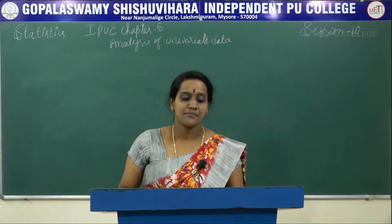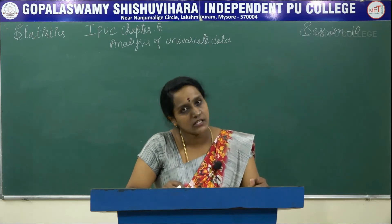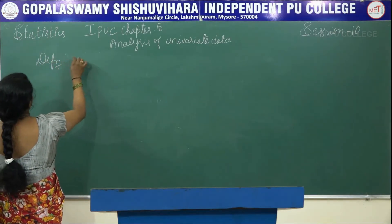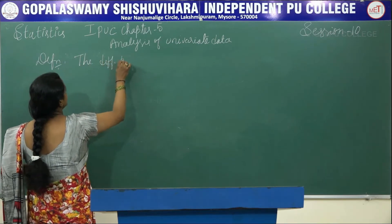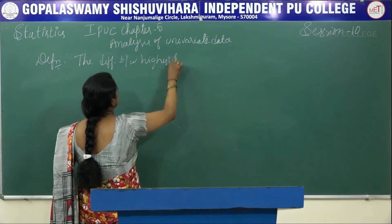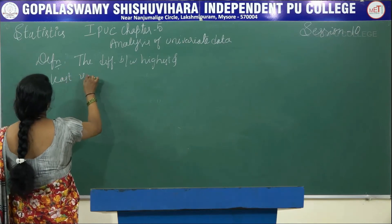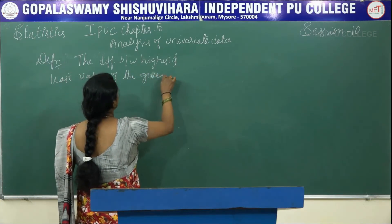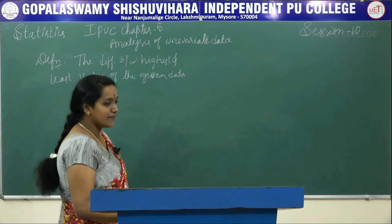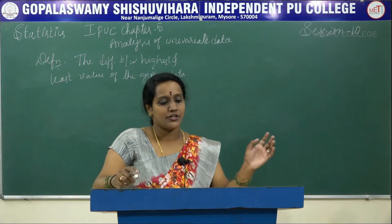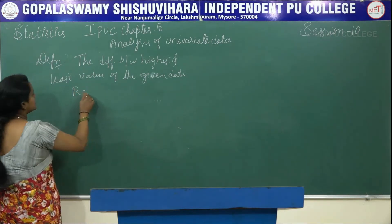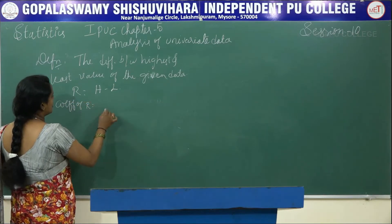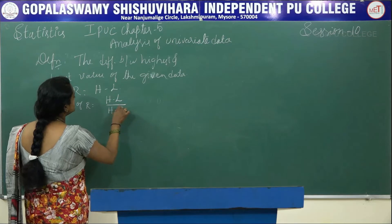First, the definition of range: it is the difference between the highest value and the least value in the given data. It is denoted by R. The formula is: R equals highest minus lowest, and the coefficient of range equals highest minus lowest divided by highest plus lowest.